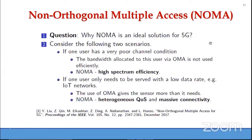Why is NOMA ideal for 5G? If one user has a very poor channel condition, bandwidth allocated via orthogonal multiplexing is not used efficiently — NOMA can give high spectrum efficiency. Also, if a user has only a low data rate requirement (e.g., IoT), orthogonal multiplexing gives more than needed, wasting resources. NOMA can support heterogeneous quality of service and massive connectivity.